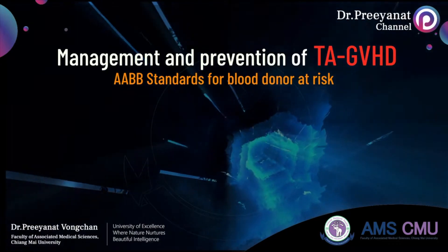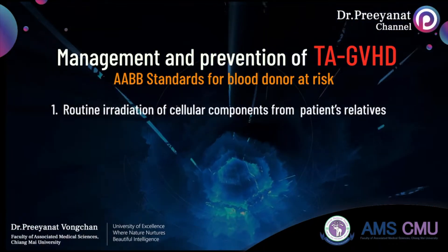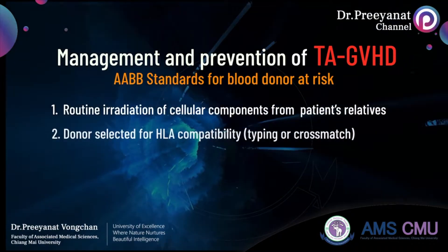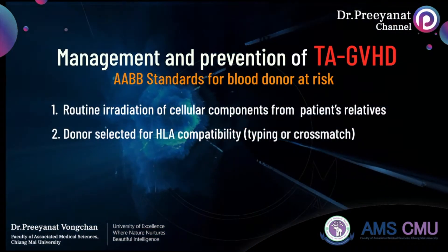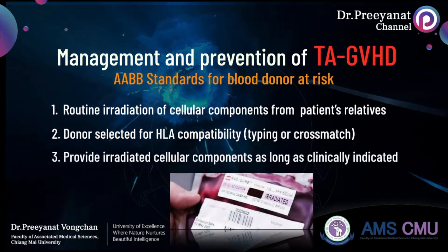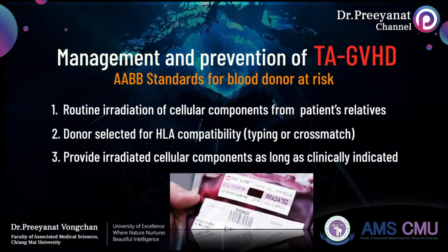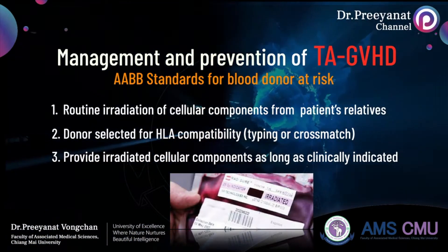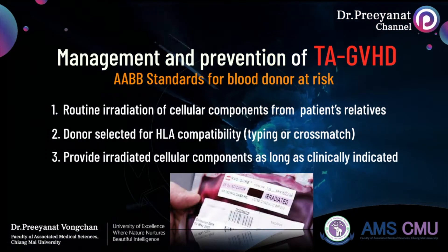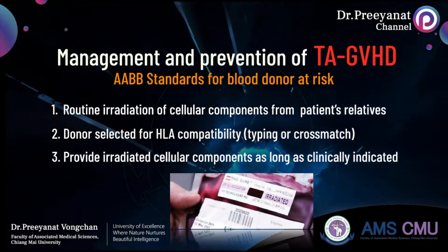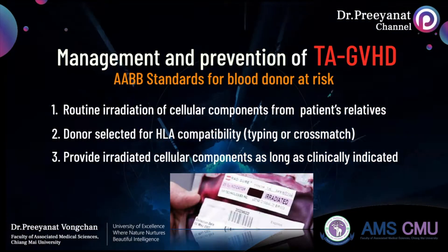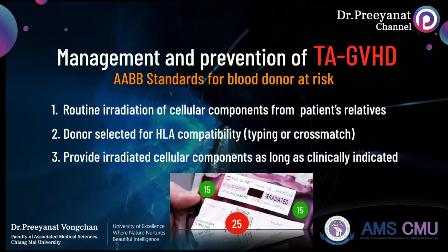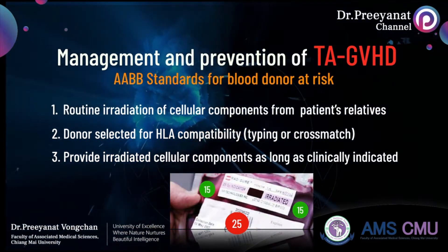AABB standards for blood banks and transfusion services require: First, routine irradiation of blood components from units collected from patients' relatives. Second, donors selected for HLA compatibility by typing or cross-matching. Third, policy should be established to define other groups of patients who should receive irradiated cellular blood components, and there must be a process ensuring that once a patient has been determined to be at risk of TA-GVHD, all cellular components will be irradiated as long as clinical risk is indicated. The dose of gamma ray mandated by the FDA is a minimum of 25 Gy targeted at midline and 15 Gy at all parts of the unit.